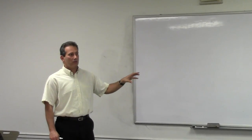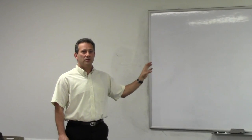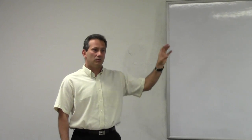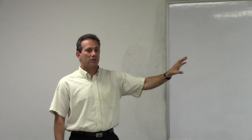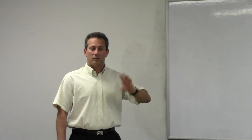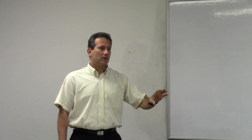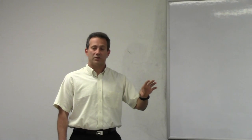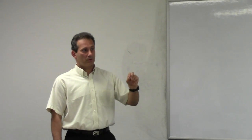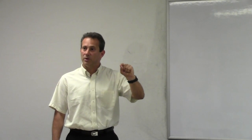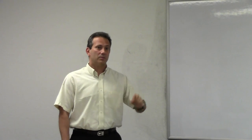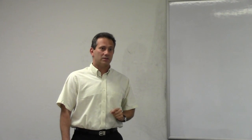Last lectures we went through the whole process of how you receive the signal and turn the received signal into a vector in a signal space. This is the process that we call the demodulator. Today we're going to talk about a second step that every digital receiver needs to go through, and it's the detection process — a process through which you're going to map the point that you have received into one of the possible M symbols that can be sent.